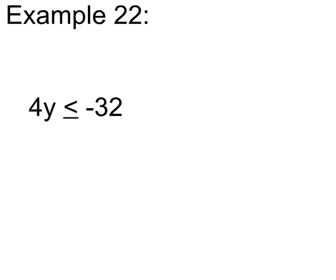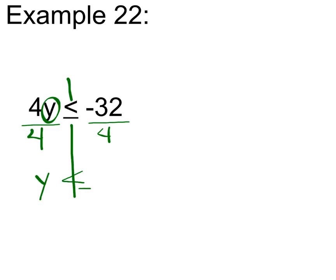Example 22. We're going to start with a line down our inequality symbol. We're going to isolate the variable y by dividing by the coefficient 4. We're dividing by a positive, so the symbol is going to stay the same.